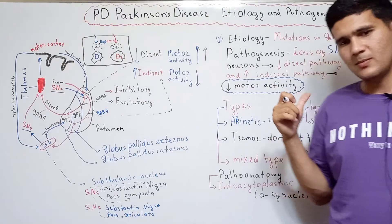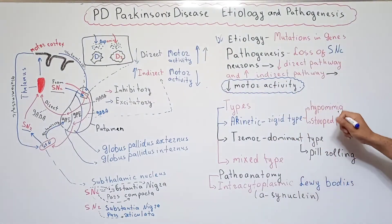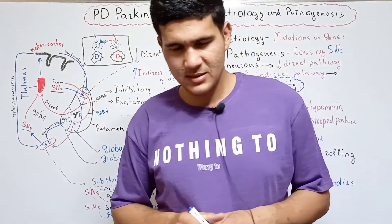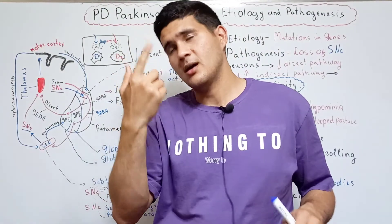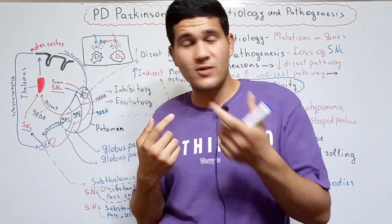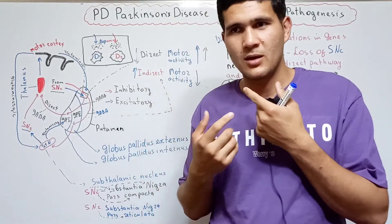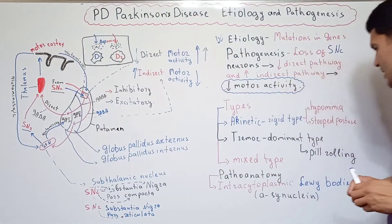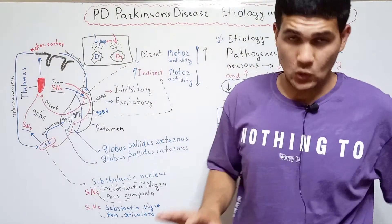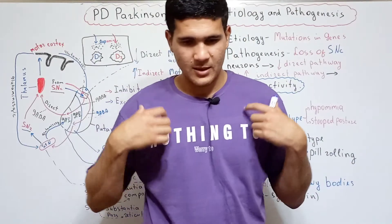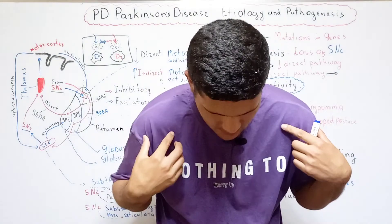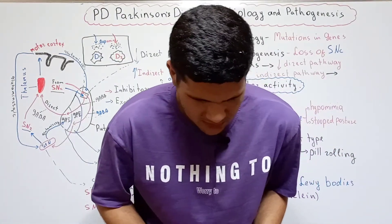The first type is the akinetic rigid type. You can detect it by two symptoms. The first one is hypomimia — you cannot easily analyze or detect the facial expression of the patient; whether she or he is happy or unhappy. The second symptom is stooped posture, where the shoulders and head are bent forward.